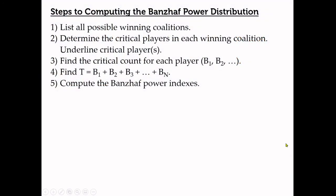Let's recap the steps to computing the Banzhaf Power Distribution. First, list all possible winning coalitions. Second, determine the critical players in each winning coalition by underlining them. Third, find the critical count for each player. Fourth, find the total number of critical counts by adding all players' critical counts. Finally, compute the Banzhaf Power Index.